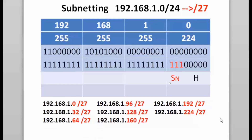If I borrow three subnetwork bits, I now have a slash 27, going from slash 24 to slash 27. With three subnet bits, two to the third power is eight — two times two times two is eight. I now have eight subnetworks created from the original 192.168.1.0 network, each subnet being slash 27, with 32 hosts or 30 usable hosts per subnetwork.